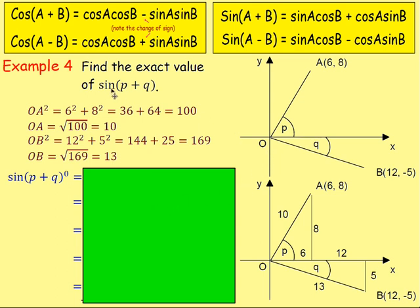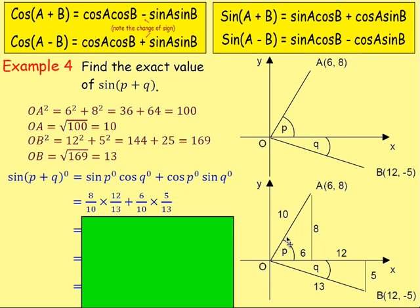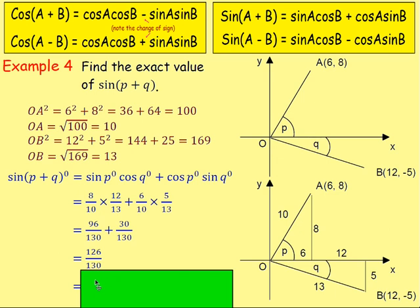To work out sin(P + Q), using the addition formula: sin(P + Q) = sin P·cos Q + cos P·sin Q. Replace sin P with 8/10, cos Q with 12/13, cos P with 6/10, and sin Q with 5/13. Multiplying numerators and denominators gives two fractions with the same denominator. Adding the numerators gives 126/130. Simplify by dividing by 2 to get 63/65, which is the exact value of sin(P + Q).